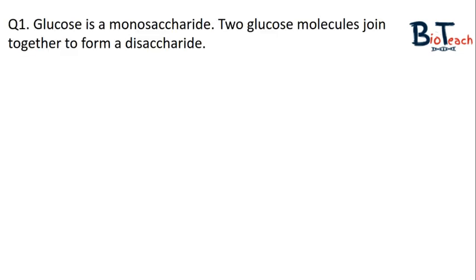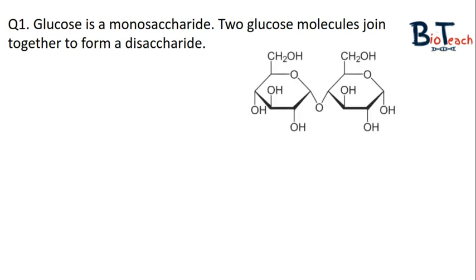Question number one starts off nice and easy. The question is about glucose being a monosaccharide and how two molecules of glucose form a disaccharide. The first part of the question is worth two marks, where you have to name the products of this reaction. I've simply added a diagram to ensure that you recall what a maltose molecule looks like. Please remember that the question is asking you about two glucose molecules joining together, so immediately you should know they're asking about maltose. The first question says: name the products of this reaction, and for two marks, you need to name two products.